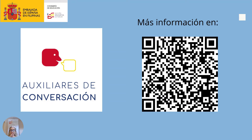Os dejo un momento para escanear este código QR, que os llevará directamente a nuestra página web donde se explica muy detenidamente, tanto en inglés como en español, el programa de auxiliares de conversación. El proceso de selección en Filipinas tiene dos fases: trabajamos con siete universidades y el Instituto Cervantes, que seleccionan candidatos y nos presentan un listado. Esas personas son entrevistadas por mí según su nivel de inglés, experiencia y conocimiento de español. Si no se cubren todas las plazas en la fase 1, se abre la fase 2 al público general, aproximadamente en febrero o marzo.